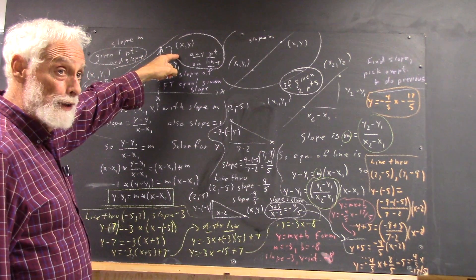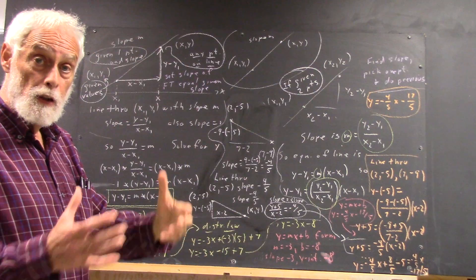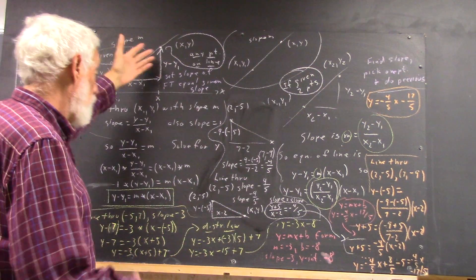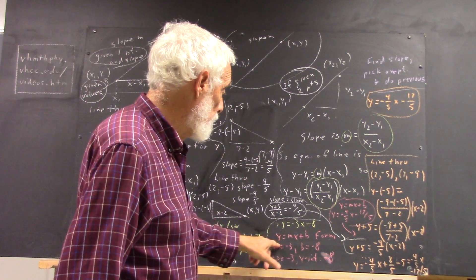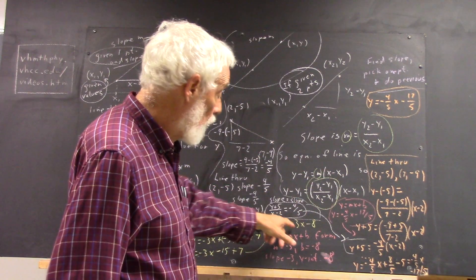where again, x, y, I'm emphasizing this, stands for an arbitrary point, not a point with given coordinates. Because x and y, of course, are going to come out down here as part of your equation. y is negative 3x minus 8. x and y are variables.